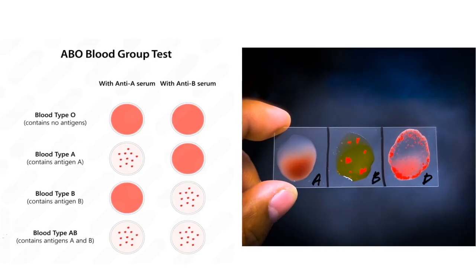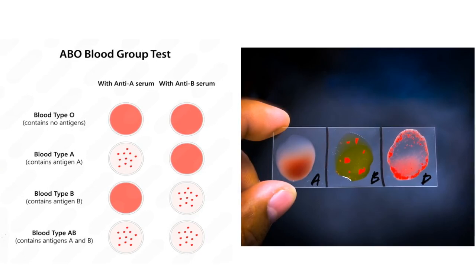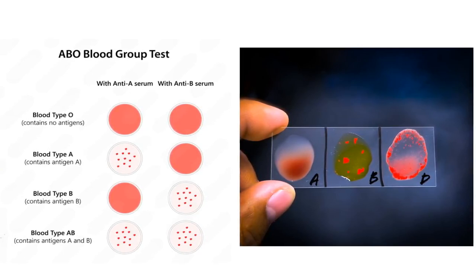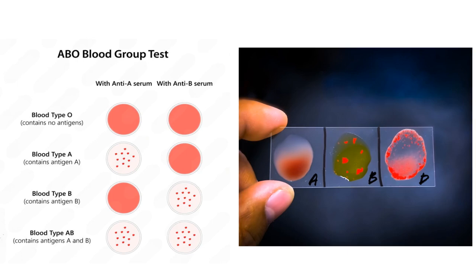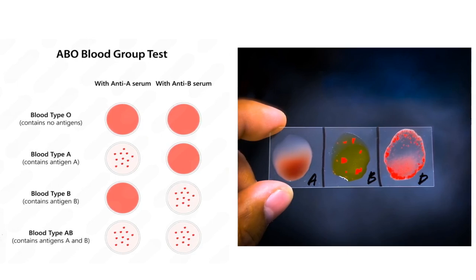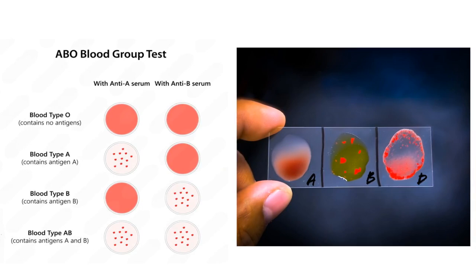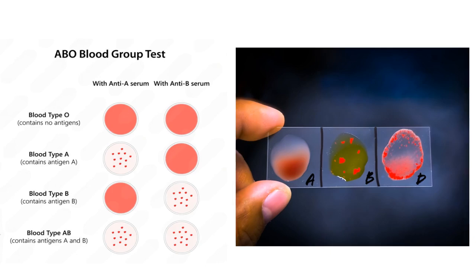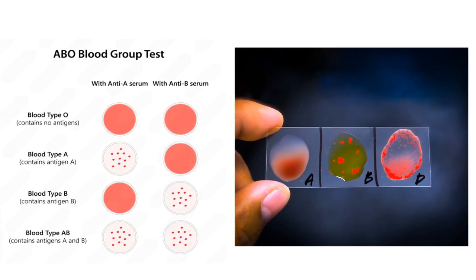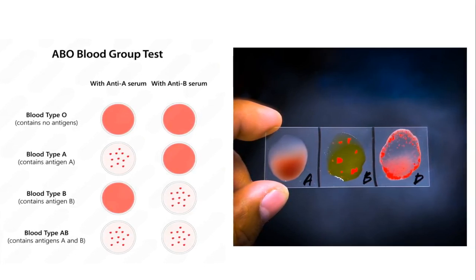For example, a blood sample is mixed with anti-A, anti-B, and anti-RH antibodies on a glass slide. No agglutination with anti-A indicates the absence of the A antigen, while clear agglutination with anti-B confirms the presence of the B antigen. Similarly, agglutination with anti-D shows the presence of the RH factor. Therefore, the blood type is determined to be B positive.